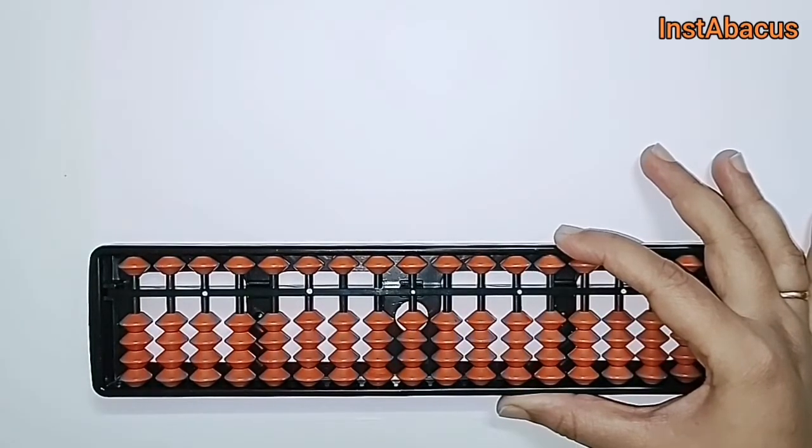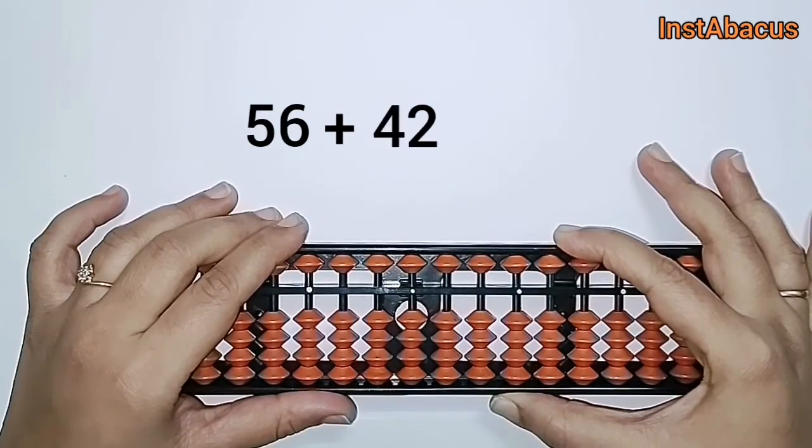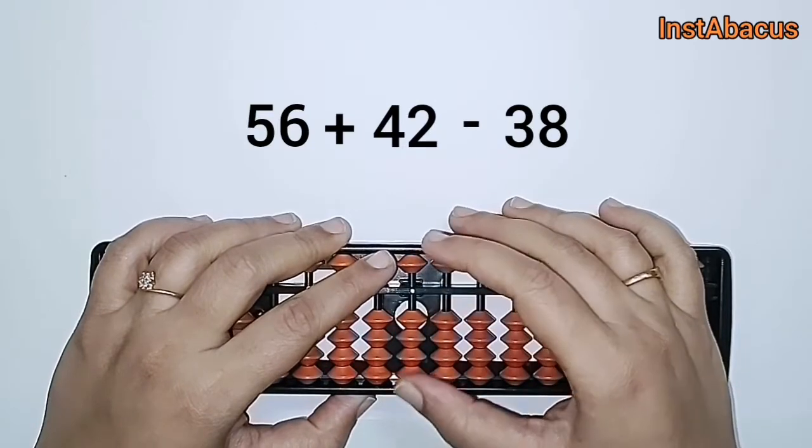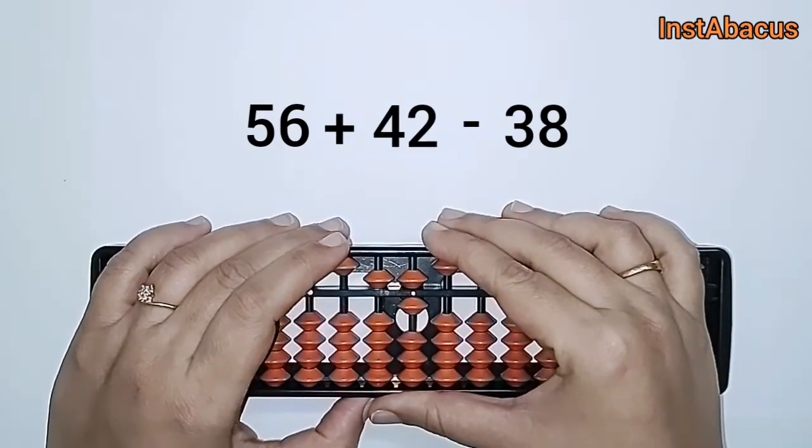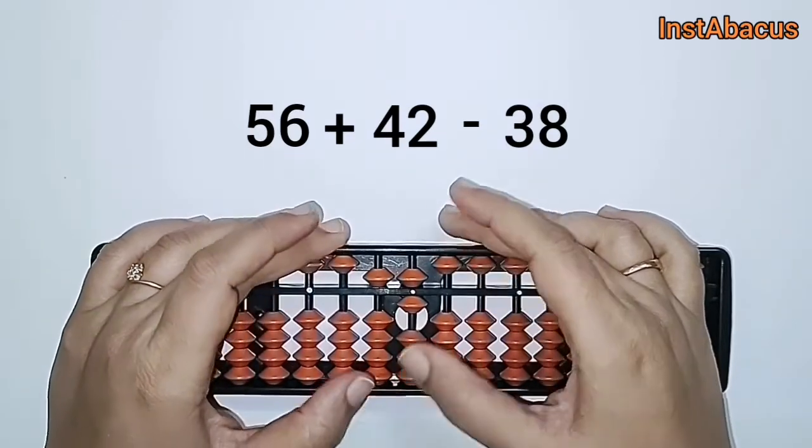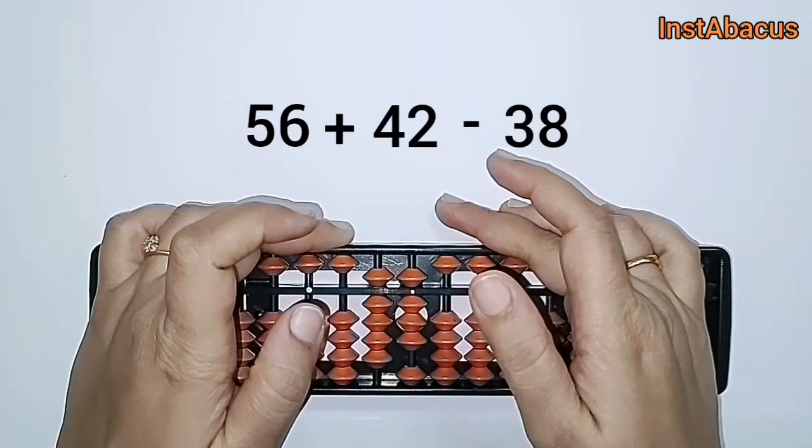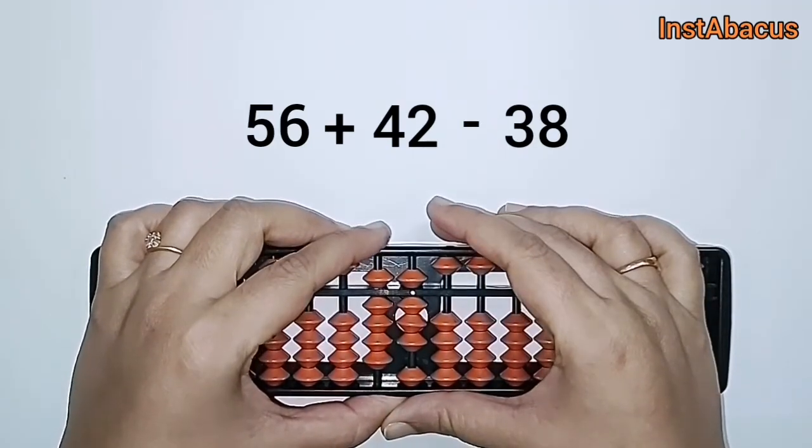Let's move on to the next one: 56 plus 42 minus 38. So 5 and 6, 56 here on our abacus. Let's add 42 by moving these four earthly beads and these two earthly beads.